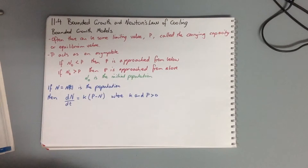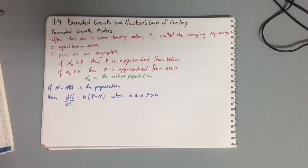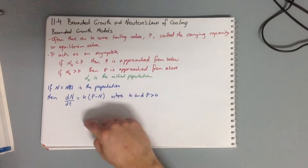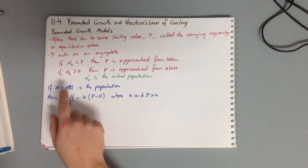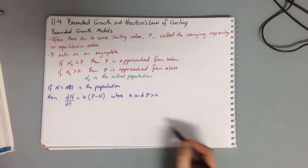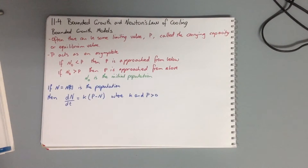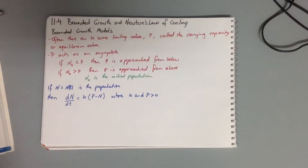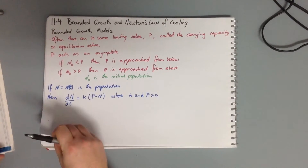P acts as an asymptote. If N₀ is less than P, then P is approached from below — the curve goes up toward it. If N₀ is greater than P, then P is approached from above — the curve comes down. If N is a population as a function of T, then dN/dt equals K times (P minus N), where K and P are greater than zero.